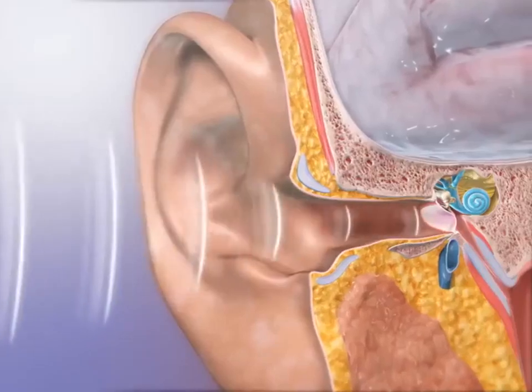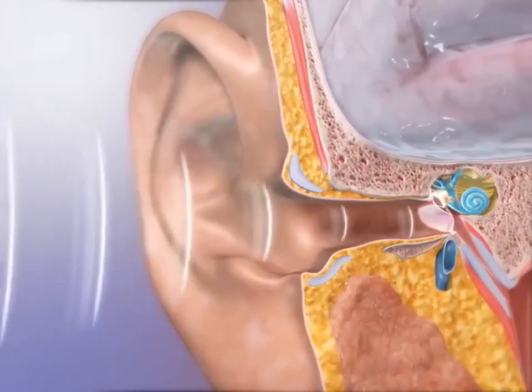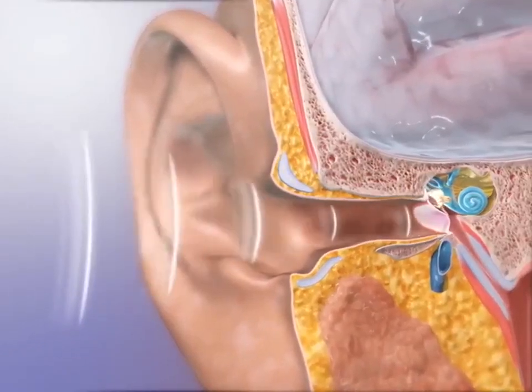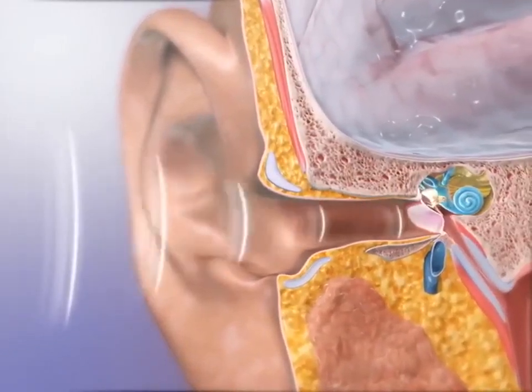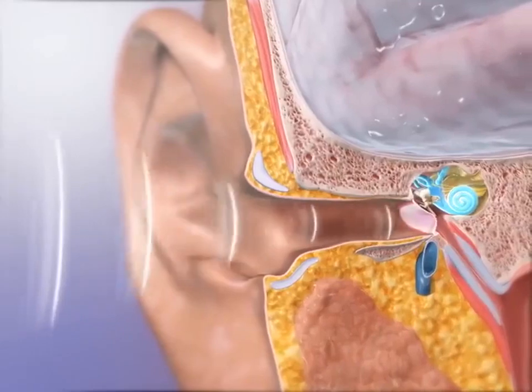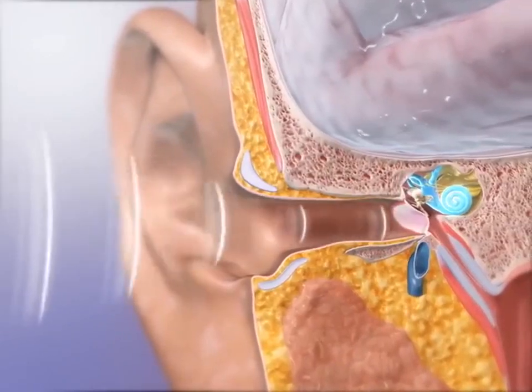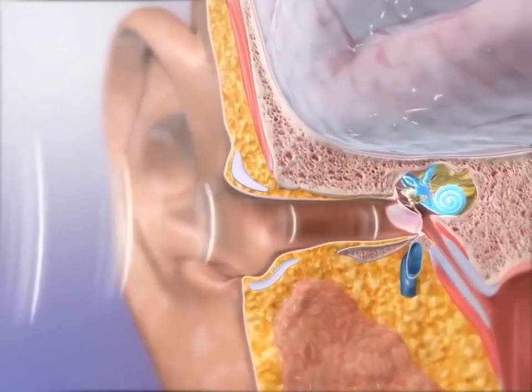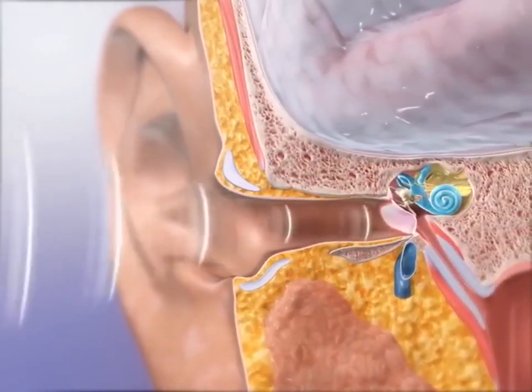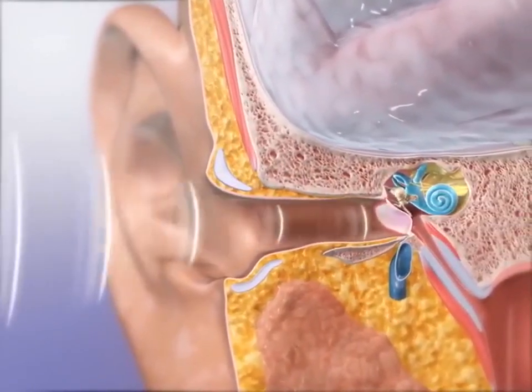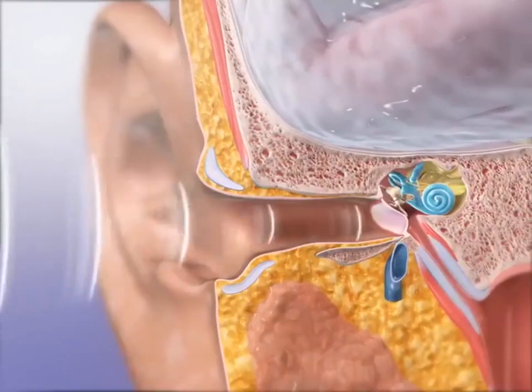The process of hearing involves sound waves creating mechanical motions that cause fluid in the ear to move in waves and trigger nerve impulses that the brain interprets as sound.